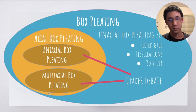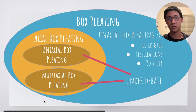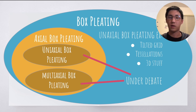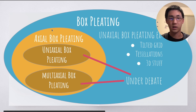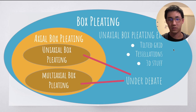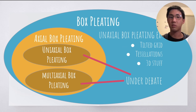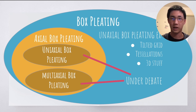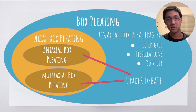Within this blue box-pleating bubble, we have a yellow bubble called axial box pleating. Axial box pleating is something very special — this is where we have our trees, our packings, basically everything we've learned so far. This axial box pleating is where we'll learn level shifters. Tilted grid has some level shifters too, but we'll get there when we get there. Within this bubble, there's debate between uniaxial box pleating, multi-axial box pleating, cross-axial, and other things — but we don't need to worry about that yet.